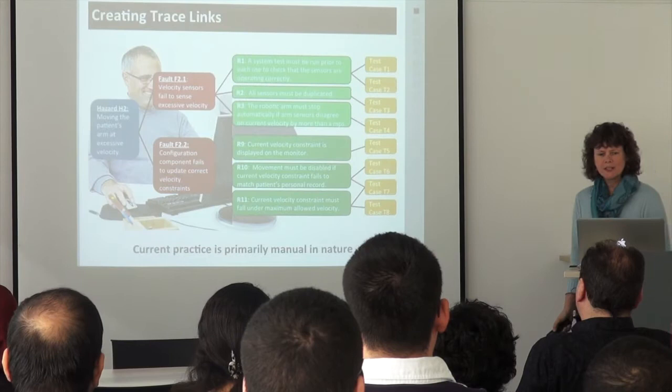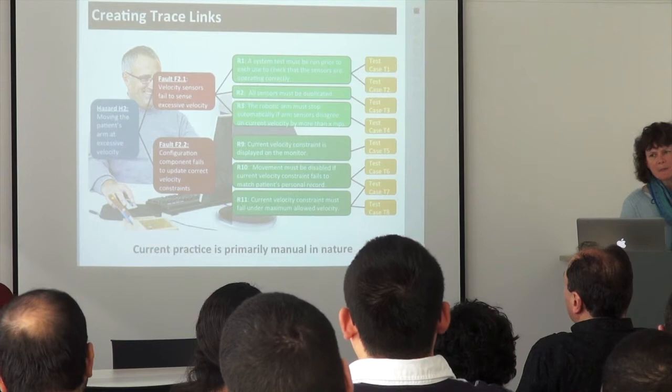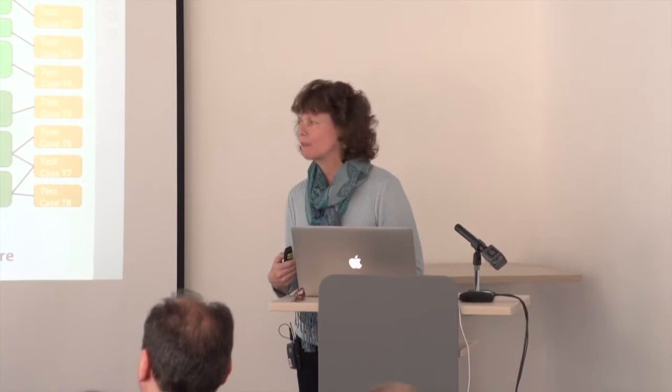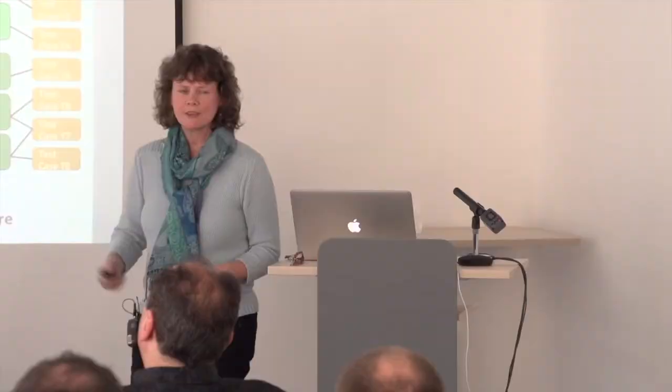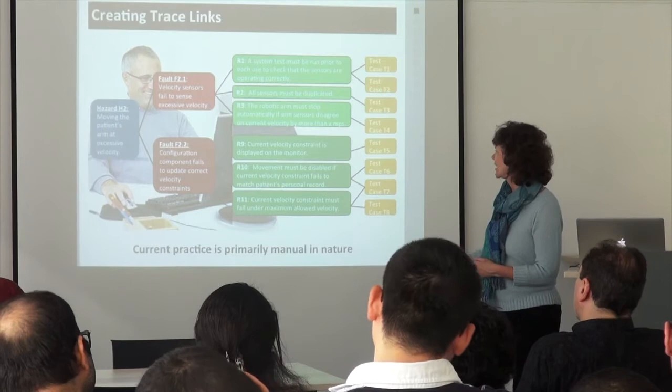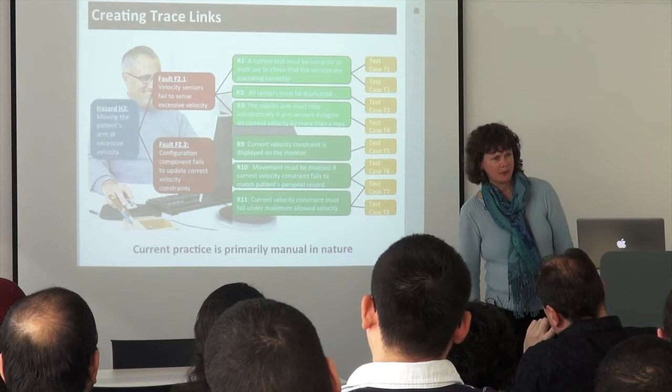What does traceability actually look like? Here we see someone at his computer with different artifacts: hazards, faults that can contribute to them, mitigating requirements or design constraints — things the system must do to prevent faults and hazards from occurring — and test cases that demonstrate the as-delivered system actually satisfies the requirements. There's something really wrong with this picture though: this guy looks far too happy. This next image is much more like a real tracer at work.